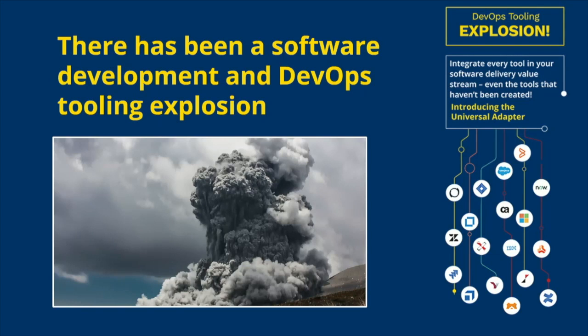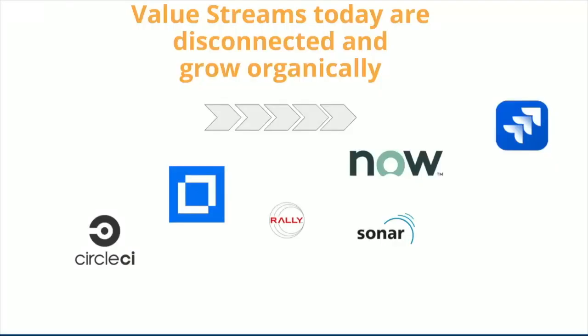There's been a DevOps tooling explosion — all different types of tools and solutions you can use to manage delivering software. But what that's caused is a little bit of chaos. Right now today, all the value stream tools are disconnected, all the value streams have grown organically. With value stream management, we want to take the waste out of that and make sure we're integrating effectively through all your different tools and letting information flow.